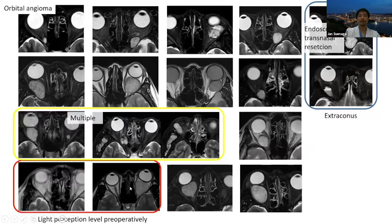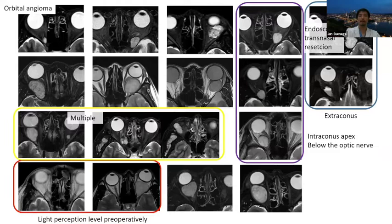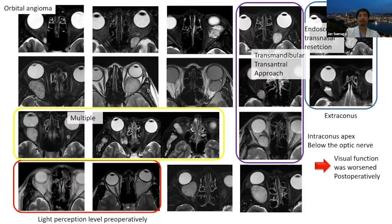Before surgery, some cases like large intraconal apex tumors present with very severe visual function loss — at light perception level. I use the transmandibular approach for these apex cases below the optic nerve, but visual function outcomes were very poor after surgery. I think this is a very dangerous area.